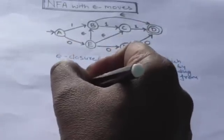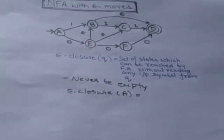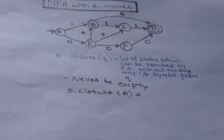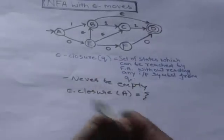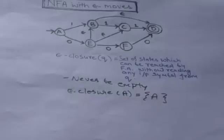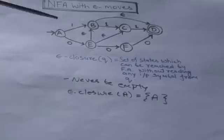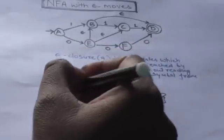Let us first find the empty closure of state A. In this NFA there is no empty transition from state A. The empty closure must contain the states in which the machine can jump without reading any input symbol. So the empty closure of any state must contain that state itself, because if the machine is in state A, without reading any input symbol it is already in state A. So empty closure of any state can never be empty — it must include the state itself.